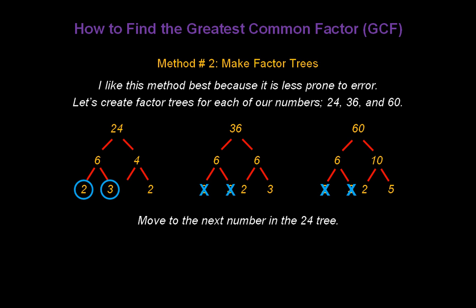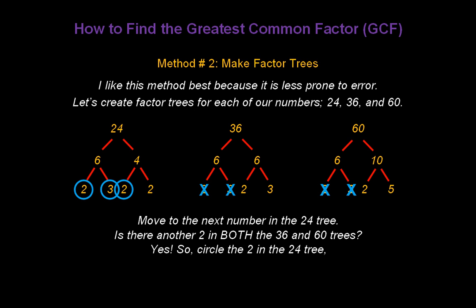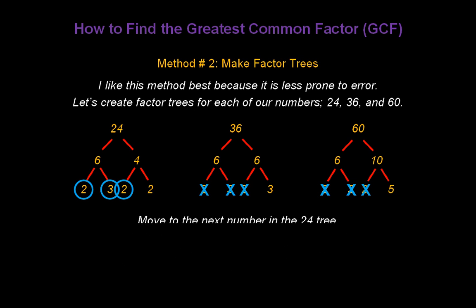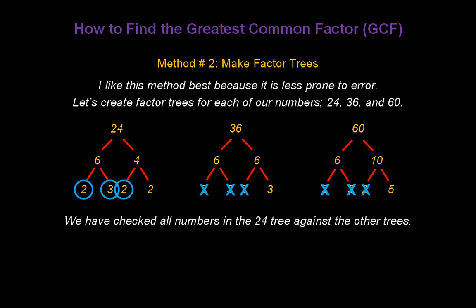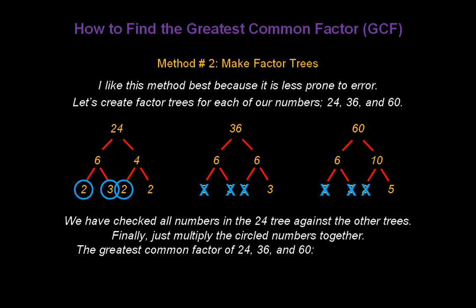Finally, move to the next number, which is also the last number in the 24 tree. It's also a 2. Is there another 2 in both the 36 and the 60 trees? Obviously, the answer is no. So we're almost done finding the greatest common factor. We've checked all numbers in the 24 tree against the other trees. Finally, just multiply the circled numbers together. So the greatest common factor of 24, 36, and 60 is 2 times 3 times 2. The answer is 12, exactly the same as we got in the other method.